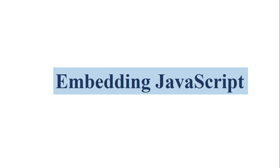There are 3 types of writing JavaScript code into HTML. The first one is inline JavaScript, the second one is embedding JavaScript, and the third one is external JavaScript. In the previous lecture we already discussed inline JavaScript — what it means and an example program.